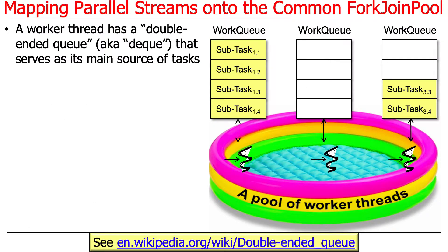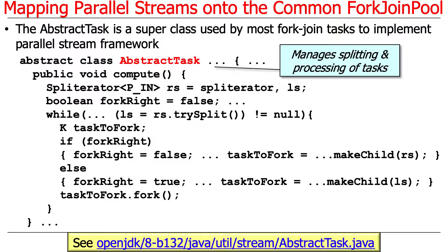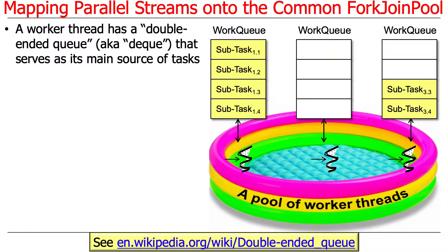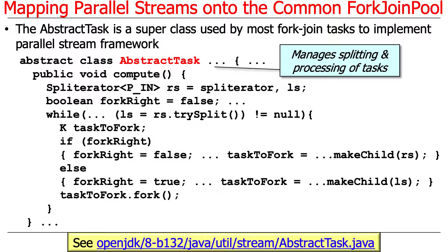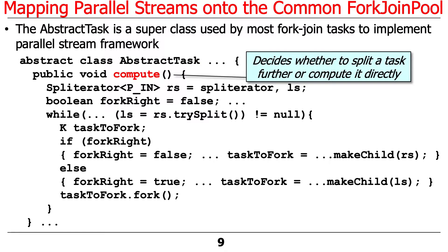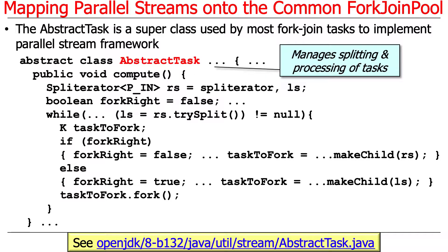The way this works under the hood is the streams framework has this abstract class — it's a superclass meant to be customized by other parts of the framework — and it's used to implement the parallel streams framework. The abstract task class is used to manage the splitting and the processing of tasks. Tasks are the things that are going to be put onto these work queues in order to do the processing of different parts of the input that has been broken up into chunks — going back to what a spliterator does. This is where the spliterator actually gets used by the parallel streams framework. This abstract task is actually a fork-join task, meant to be used with the fork-join pool.